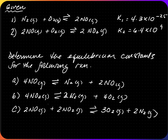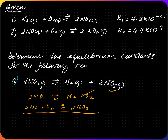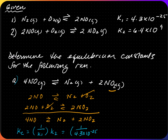For part A, the second equation stays as-is because we need NO2 on the product side. The first equation must be flipped to cancel the O2. The overall reaction becomes 4NO → N2 + 2NO2. Since equation 1 was reversed, we use 1/K1; equation 2 stays as-is, so we use K2. Calculating: (1 / 4.3×10⁻²⁵) × (6.4×10⁹) = 1.5×10³⁴.